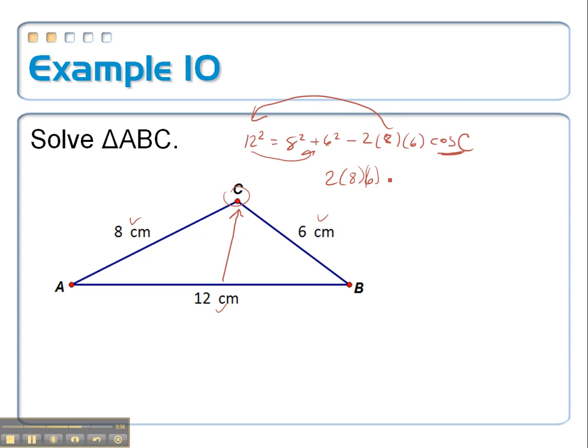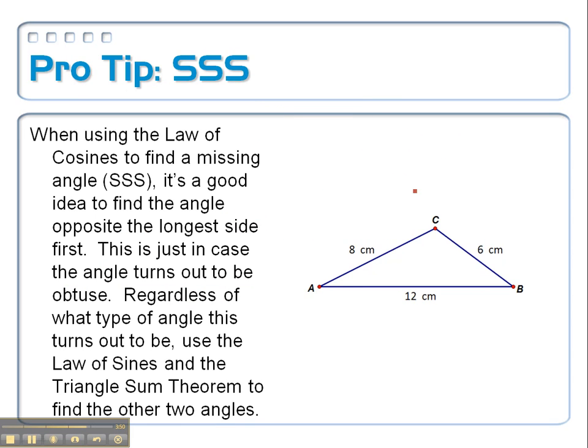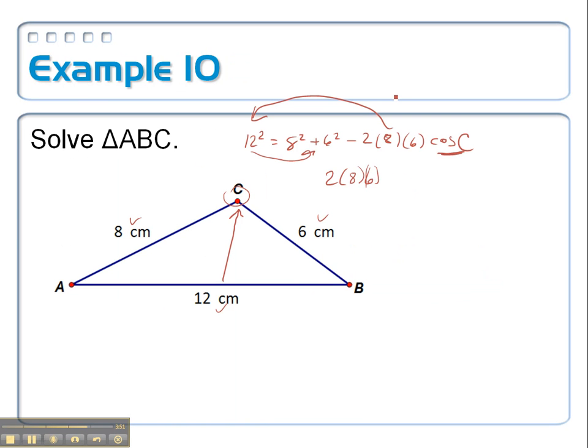should be equal to 8 squared plus 6 squared, whoops, I forgot in here, this should be, let me pull out the eraser. Times the cosine of C, there we go, equals 8 squared plus 6 squared minus the 12 squared.